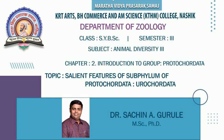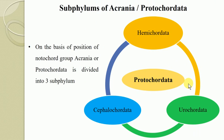In the previous video of Subject Animal Diversity 3rd of SYBSC, we learned the topic from Chapter 2, that is Introduction to Group Protochordata. In that video we started with the subphylums of Protochordata and finished with the first subphylum, that is Hemichordata. Protochordata is divided into 3 subphylums: Hemichordata, Urochordata, and Cephalochordata.